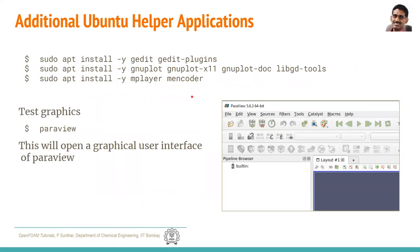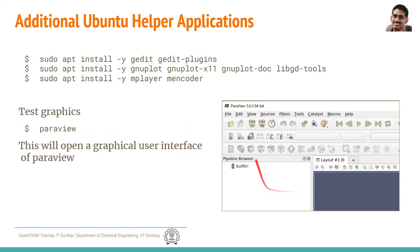There are some other helper applications which you also need to install, as they are useful when doing analysis using OpenFOAM. Some of them are gedit — a file editor you can use to edit files. You can also install gnuplot and gnuplot-x11, which are used to plot simple graphs. Also install a Paraview package. Just do an install of all of these things on your Ubuntu terminal. Once all this is done, you can check if your graphics is working — go to your Ubuntu terminal prompt and type 'paraview'.